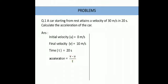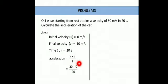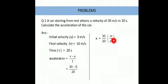Acceleration is also written as small 'a'. Final velocity is 30, initial velocity is 0, and time is 20 seconds. If initial velocity is 0, that means speed is increasing — there is acceleration. So this becomes 30 divided by 20, and the SI unit of acceleration is meter per second squared. 30 divided by 20 gives 1.5 meter per second squared.